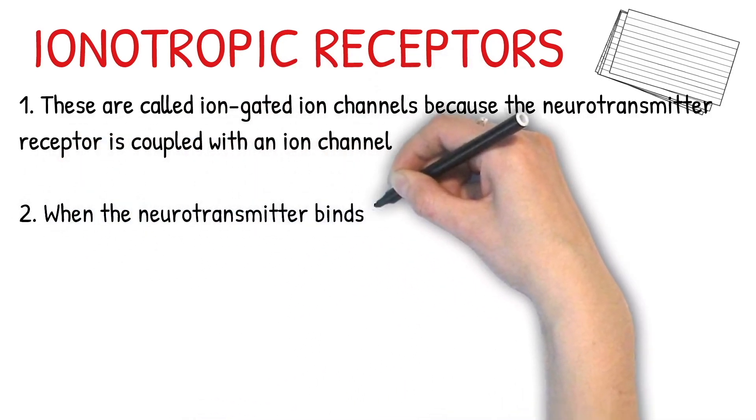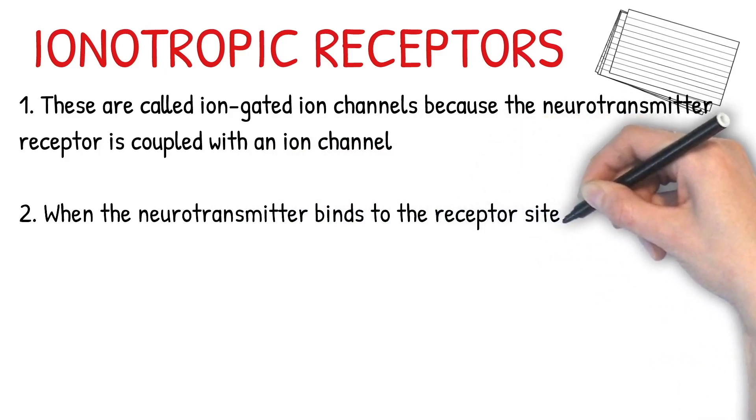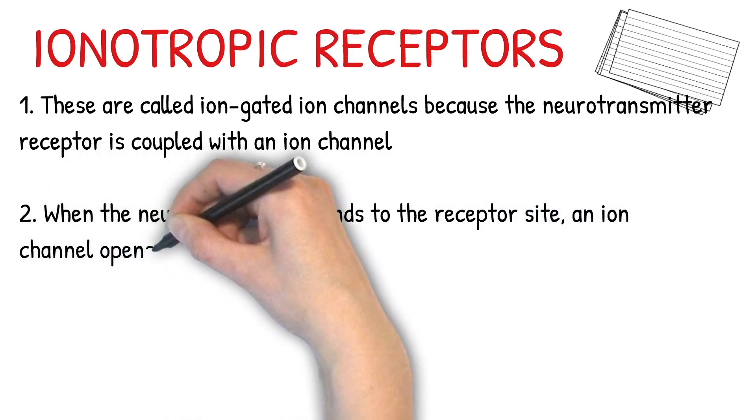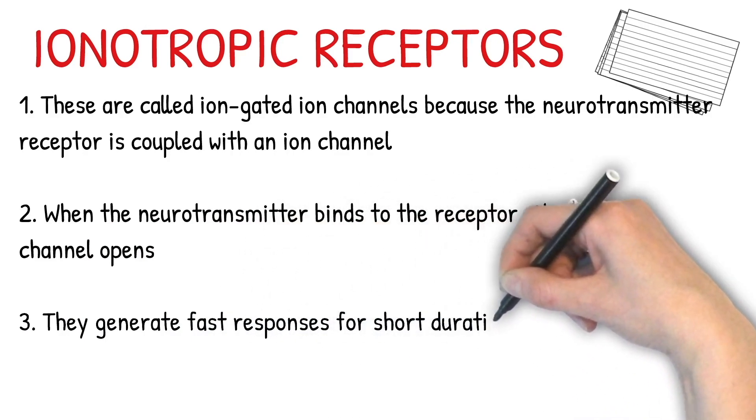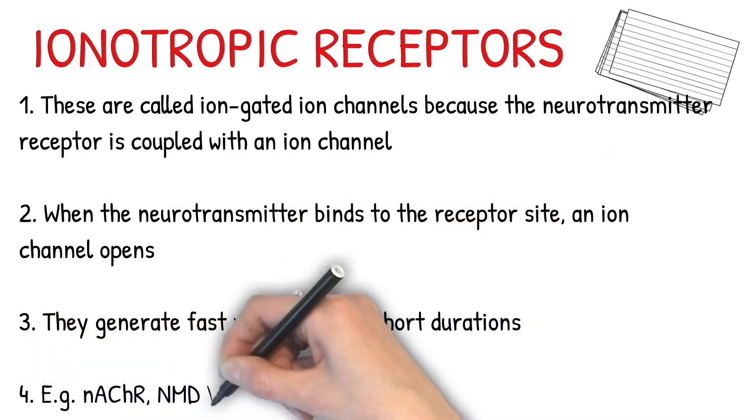Some examples of ionotropic receptors include nicotinic acetylcholine receptors, NMDA and AMPA receptors, GABA-A receptors, and serotonin type 3 receptors.